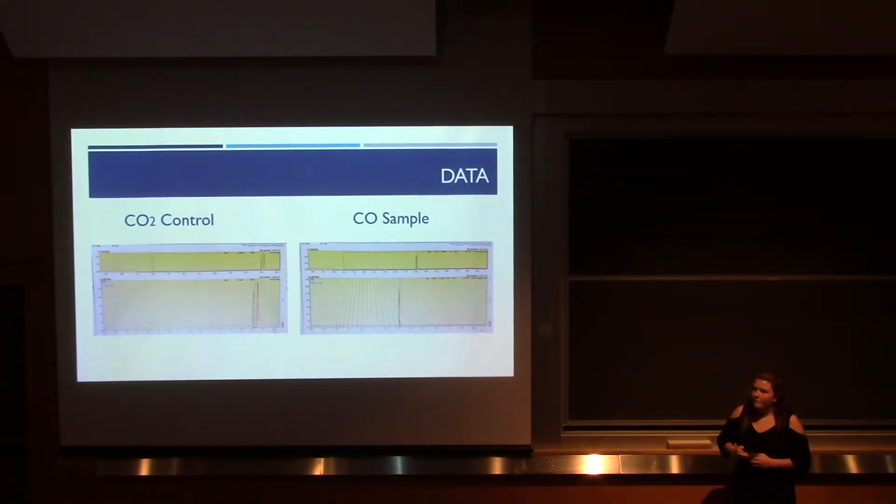This is data from some of our first runs. So first we started by taking a carbon dioxide control. We flushed carbon dioxide through the system without carbon for about 20 minutes and took one of those samples. When analyzing the gas chromatograph, we saw that only carbon dioxide was found in the sample, which is what we were expecting.